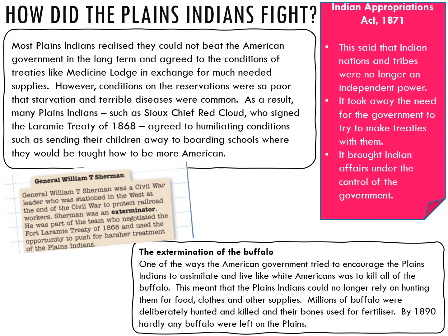General William T. Sherman, who was a Civil War leader, was stationed in the West and given the task of protecting the railroad. And he was an exterminator. This man in a position of power used the Fort Laramie Treaty as an opportunity to be increasingly harsh towards the Indians in the land where he was stationed, and the exterminators were very keen to push through their plans.